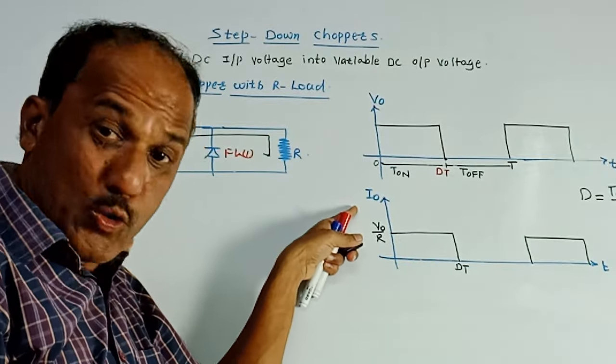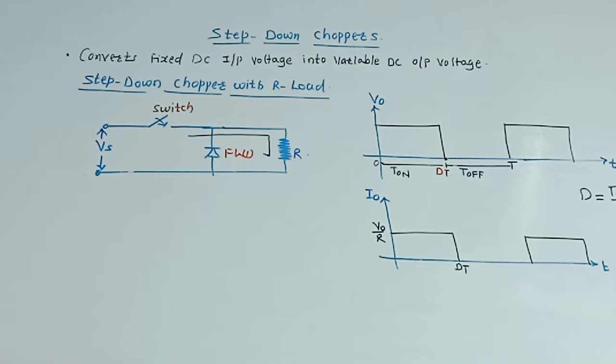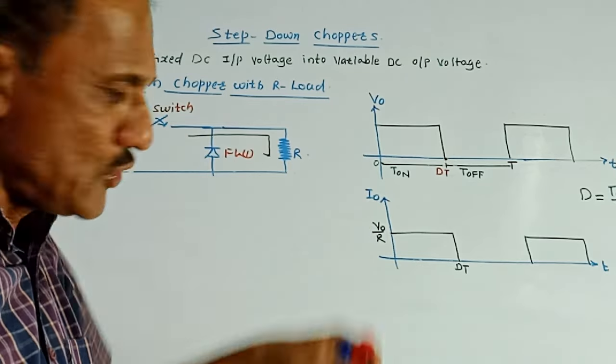Next is graph of current, output current versus time. Very simple. Current is voltage upon resistor. So this current is V0 upon R.